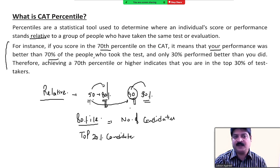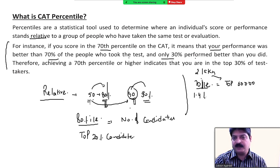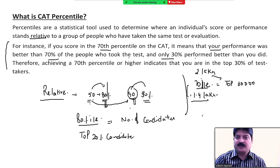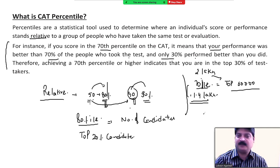You are among the top 20 percent of candidates. For instance, if you score in the 70th percentile on the CAT, it means your performance was better than 70 percent of the people who took the test, and only 30 percent performed better than you. Let's say 200,000 people appear in CAT and you are getting 70 percentile — that means 140,000 people scored less than you, and you are among the top 60,000 candidates.